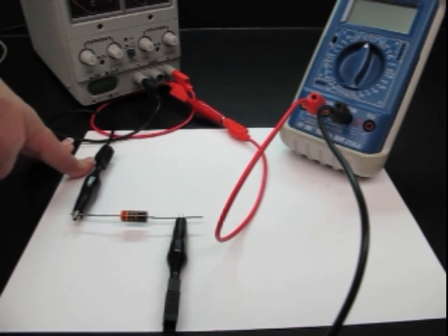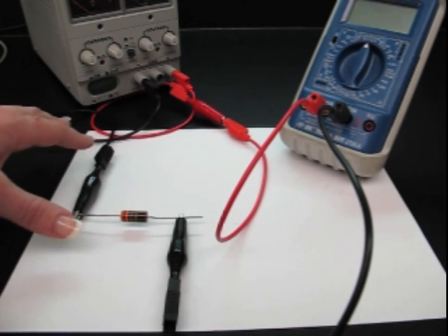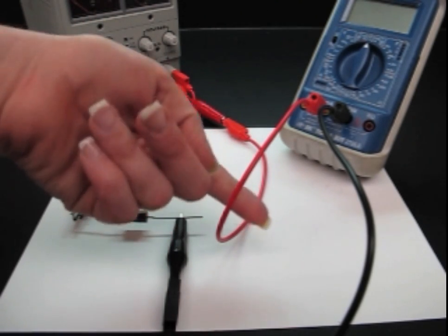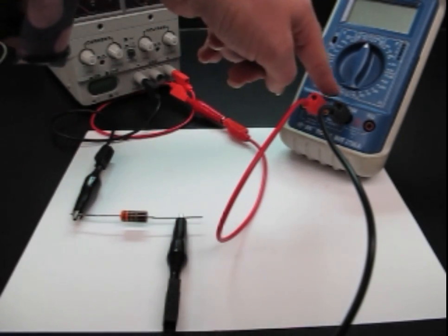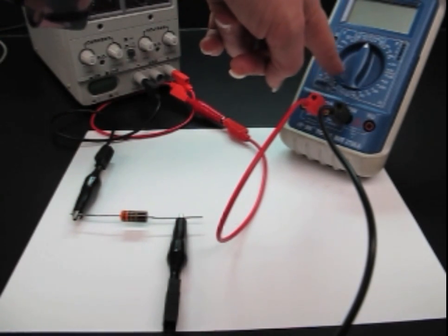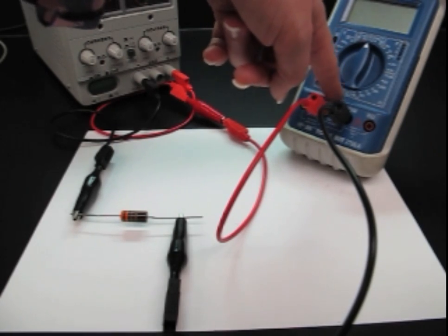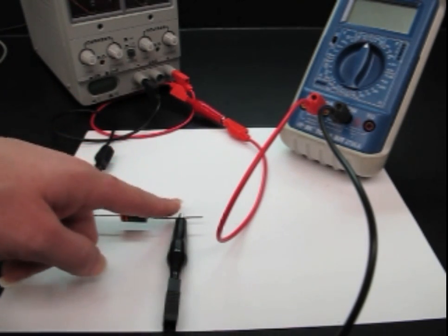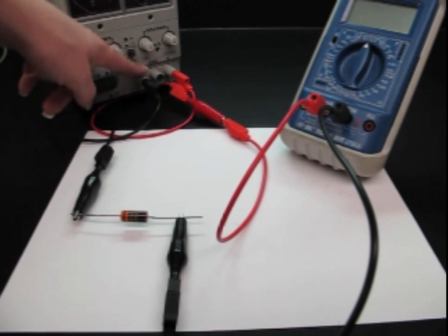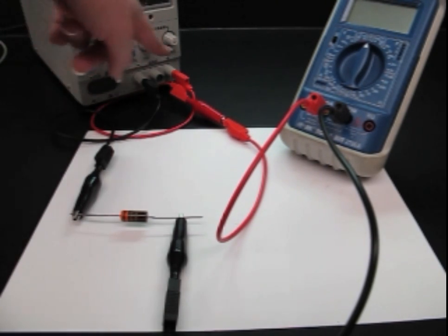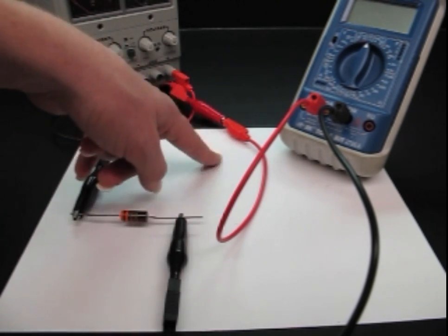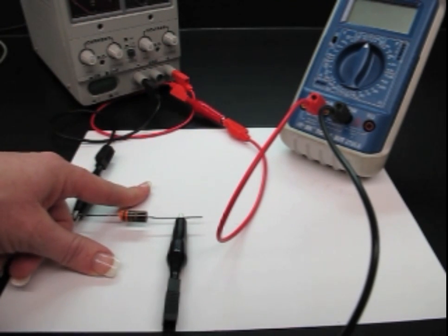So again we will go ahead and trace our circuit to make sure that everything is connected correctly and safely. So we will go from our power supply, our ammeter has gotten into our circuit and we have our current going through our ammeter and then out to our resistor and then back into the ground of our power supply. So now we have a closed circuit where we are able to take measurements for current.